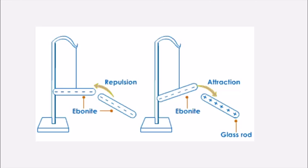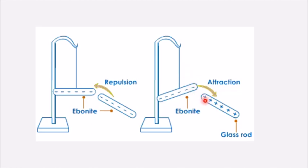Here in this picture, in the first diagram, two ebonite rods are shown carrying the same charge — both are negative. So if you bring negative and negative together, there will be repulsion. But if you see the other diagram, there is a negative charge and a positive charge. When you bring these two together, they attract each other. So there will be attraction between the negative and the positive charge. This is called attraction and repulsion.